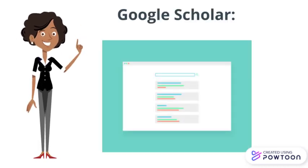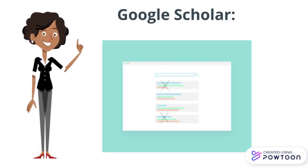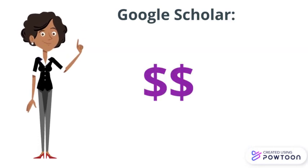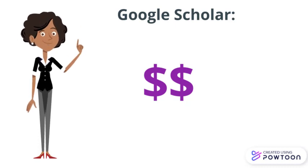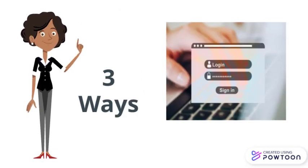Many people don't realize that Google Scholar can't provide full-text access to everything that comes up in the results. This is because most scholarly articles are published in journals that are not free. The good news is that Douglas College Library subscribes to thousands of scholarly journals, but Google Scholar won't know that unless you provide your institutional credentials in some way. Fortunately, there are three straightforward ways to do this.